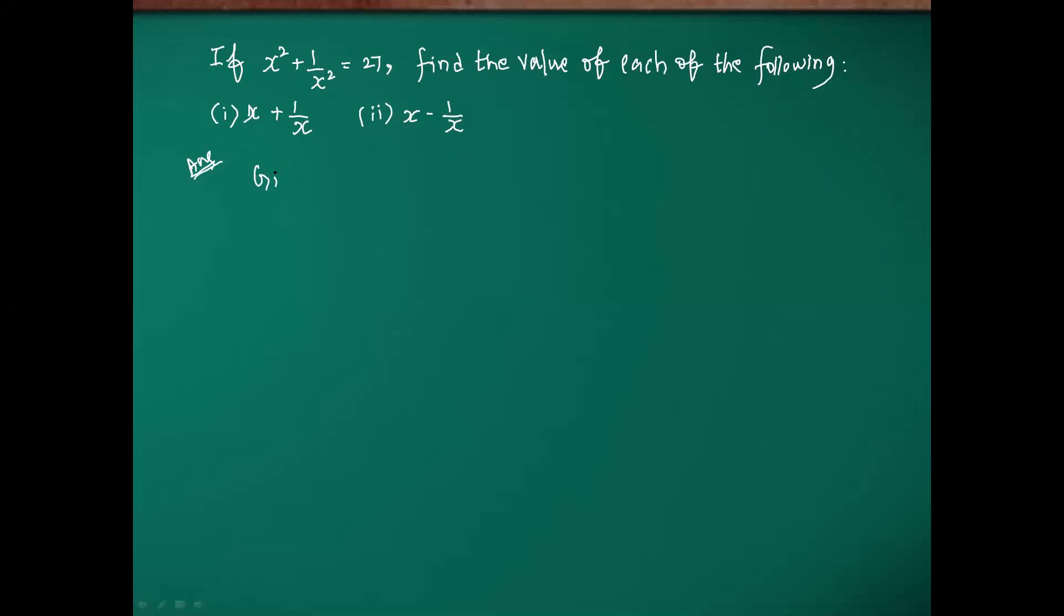What is the given thing? Given: x square plus 1 by x square equals 27. But in the given we have a square, what we need to find there is 1. We need to find x plus 1 by x. Let me square on both sides.